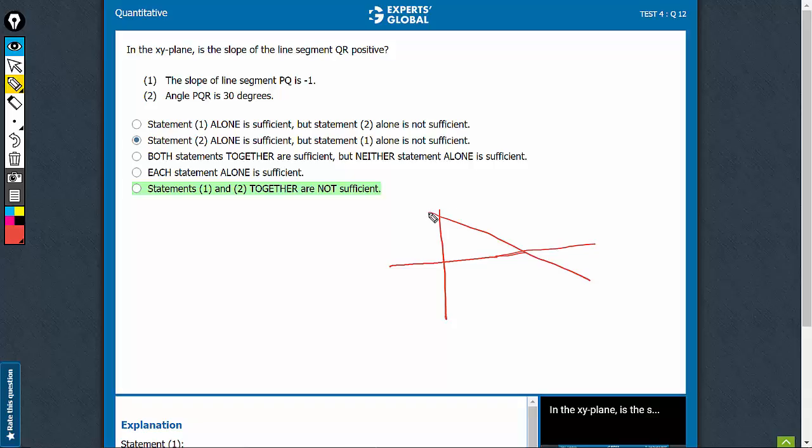So P must be somewhere here, Q is somewhere here. It's falling at 45 degrees. Of course, it doesn't have an R in it, so this question cannot be answered using statement 1.